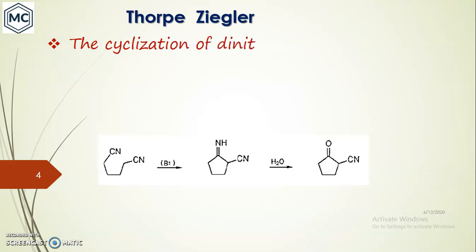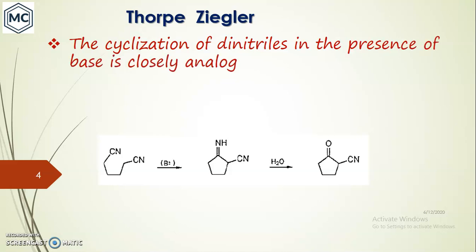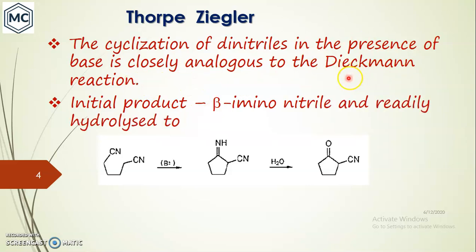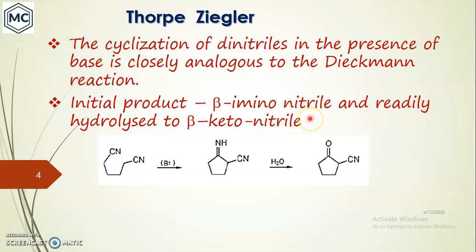Now, Thorpe-Ziegler condensation — what is the difference between Thorpe and Thorpe-Ziegler? Thorpe-Ziegler is a cyclization of dinitriles in the presence of base, and is closely analogous to the Dieckmann condensation, which is the intramolecular cyclization of diesters. Here, instead of diesters, dinitriles are used. The initial product of the Thorpe-Ziegler reaction is a beta-iminonitrile, which readily hydrolyzes to give a beta-ketonitrile.